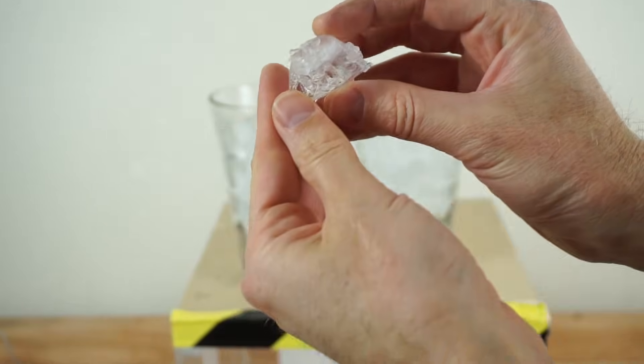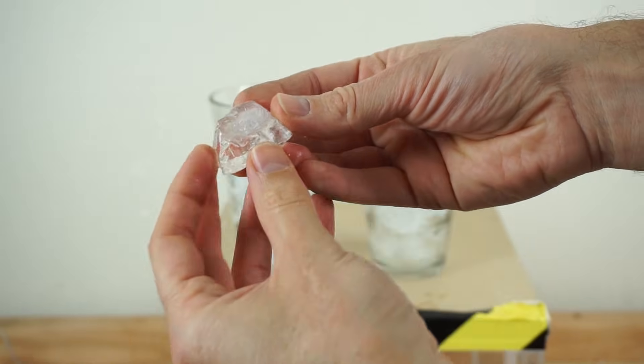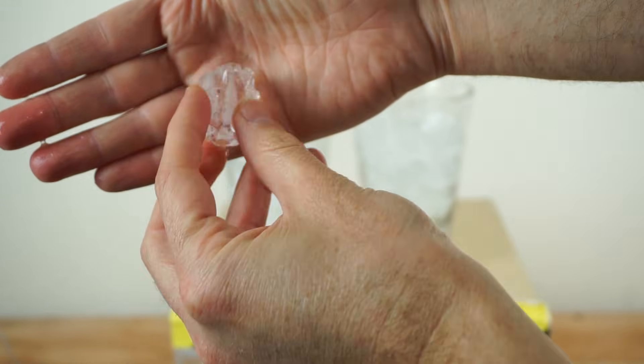So while we're waiting you can see on this piece of ice here, the salt has seemingly eaten little chunks into it. See how it's all jagged and there's holes in it.